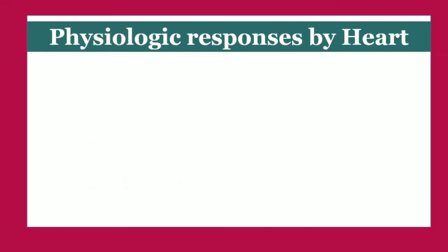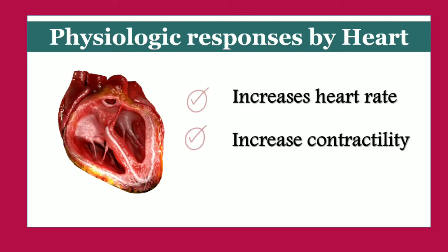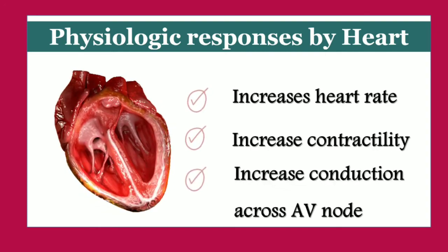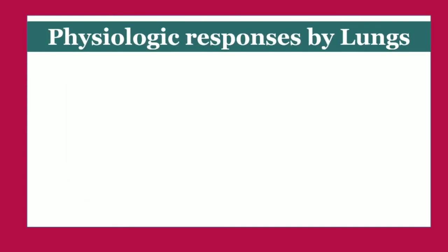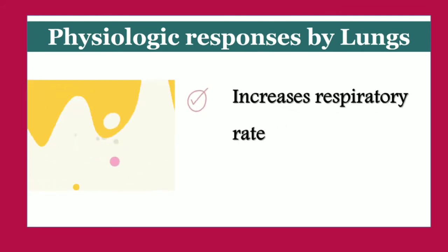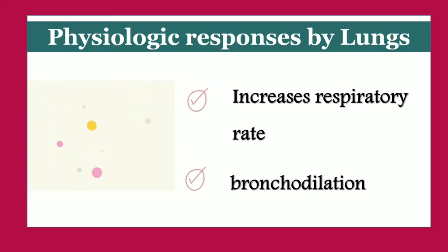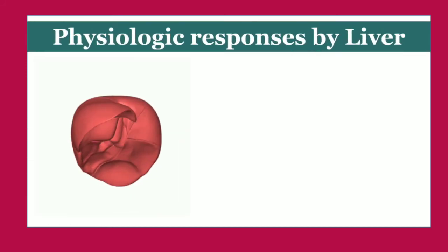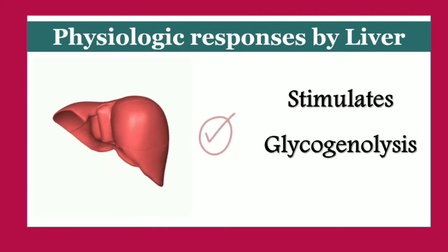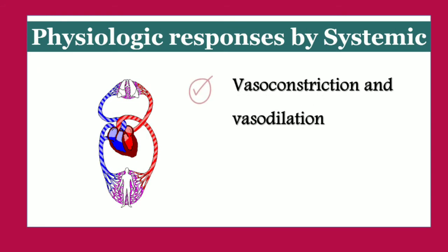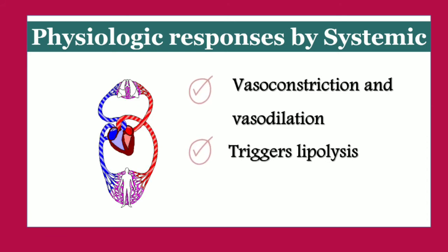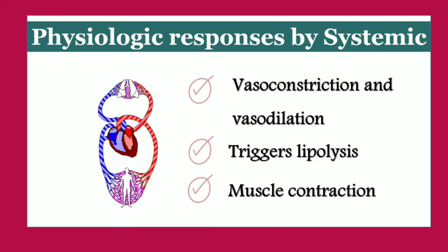The physiologic response by the heart includes increases in heart rate, contractility, and conduction across the AV node. The physiologic response by the lungs includes increasing respiratory rate and bronchodilation. The liver response includes stimulating glycogenolysis. Systemic responses include vasoconstriction, vasodilation, and it triggers lipolysis — a metabolic pathway through which lipid triglycerides are hydrolyzed — helping in muscle contraction.